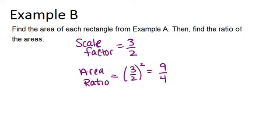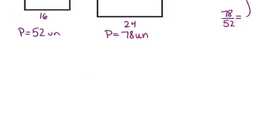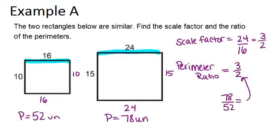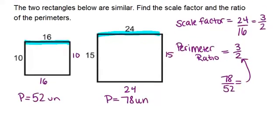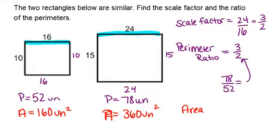Let's go back to example A and test if the area ratio is actually 9 over 4. To find the area of each rectangle, we multiply base times height. For the smaller rectangle, it's 160 units squared because that's 10 times 16. For the larger rectangle, it's 360 units squared because that's 24 times 15.